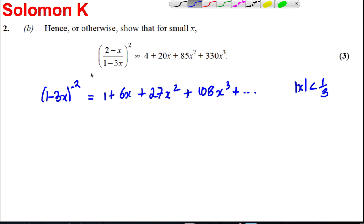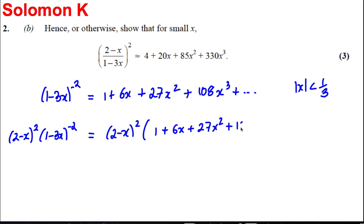Okay, now this, if we write this differently, this is the same thing as (2 - x)² × (1 - 3x)^(-2). Okay, this thing here. So what we want to do is take (2 - x)² and multiply it by our result from part A, namely 1 + 6x + 27x² + 108x³ plus dot dot dot. And (2 - x)² is... That's (2 - x)(2 - x). That's 4 - 4x + x² multiplied by 1 + 6x + 27x² + 108x³.